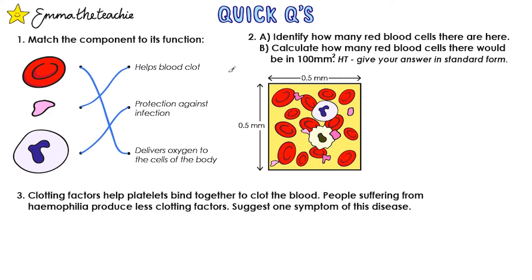Number two: identify how many red blood cells there are. So we just need to spot them in the diagram and cross them off as we count — and there are thirteen red blood cells.